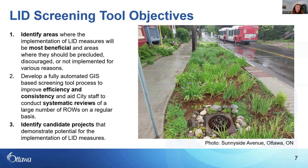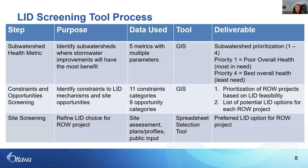The third objective was to identify candidate projects that demonstrate potential for the implementation of LID measures. In order to accomplish this, as a first step, a decision matrix that considers five sub-watershed health metrics was used to determine the location of priority sub-watersheds.